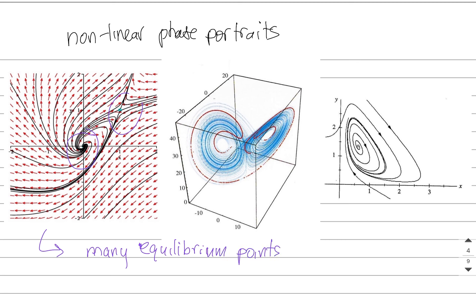You can have more than one. In systems like this, you can have sort of patterns for the trajectories that are not like the ones for linear systems. This thing is something interesting. This is called a limit cycle.